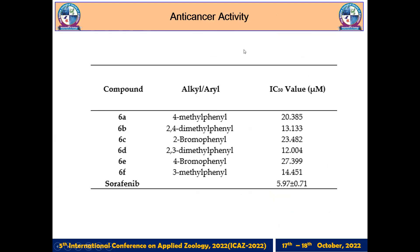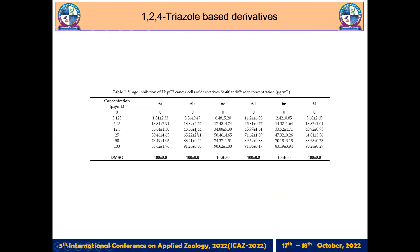After successful synthesis, the compounds were checked for their anti-cancer activity against the HepG2 cancer cell line. Results were very promising; especially compounds 6b and 6g showed excellent activity with the lowest IC50 values. This table shows the percentage inhibition against the HepG2 cell line for compounds 6a to 6f at different concentrations.